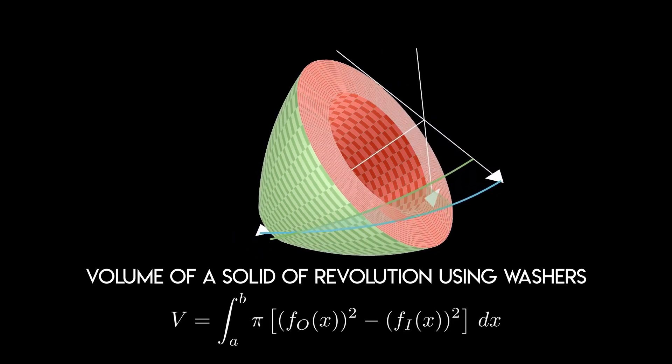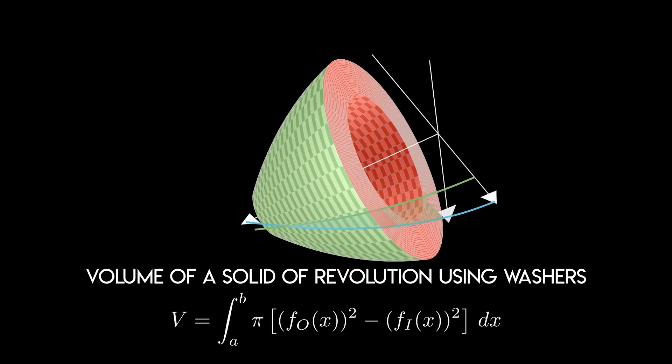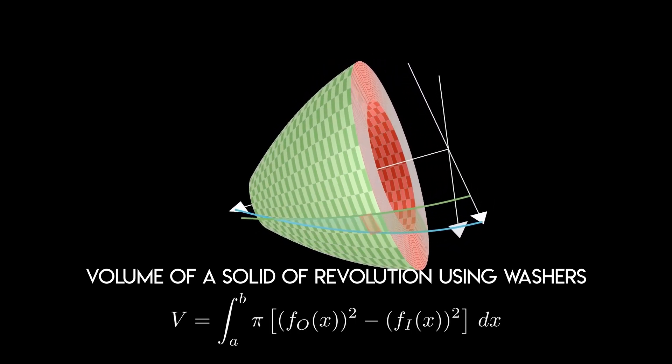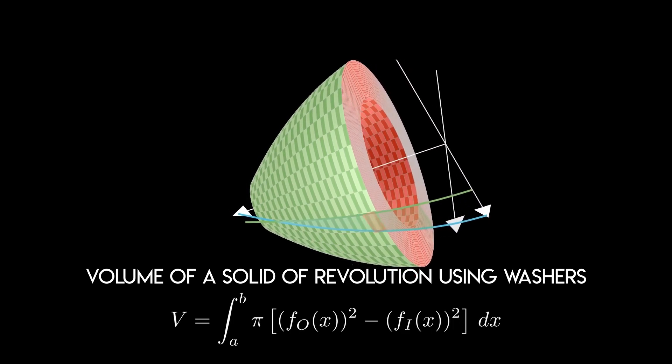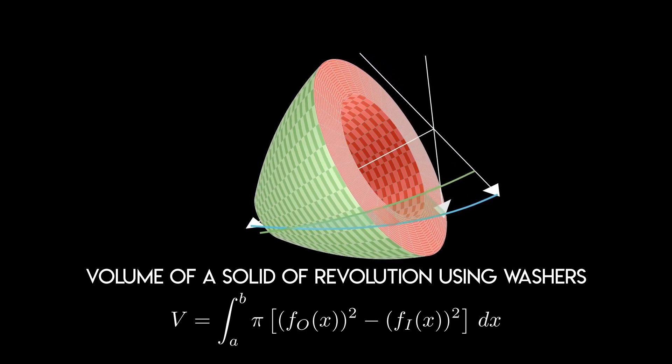As the definite integral of pi times the difference of the square of the outer function, which in this case is the upper function designated by f sub capital O, and the square of the inner function, or the lower function, designated by f sub capital I, evaluated from a to b.